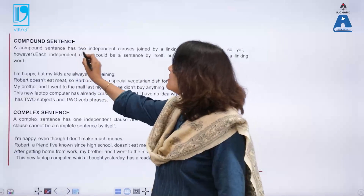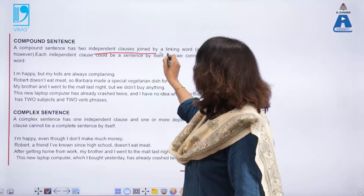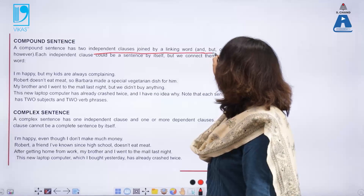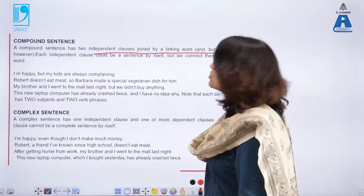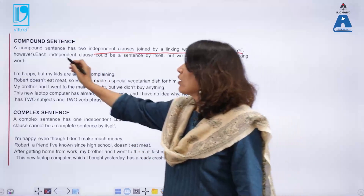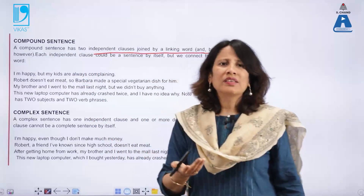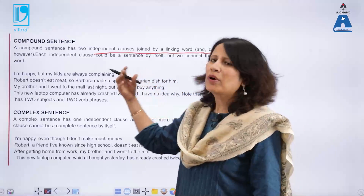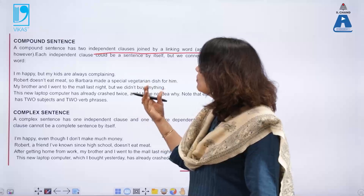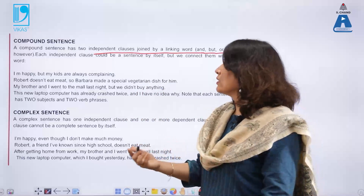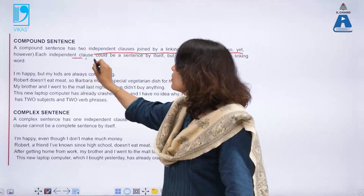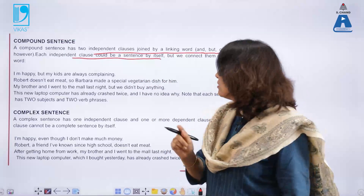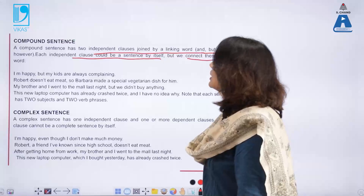A compound sentence has two independent clauses joined by a linking word, which is a conjunction — and, but, or, so, yet, however. These linking words are used in compound sentences. Each independent clause could be a sentence by itself, but we connect them with a linking word.